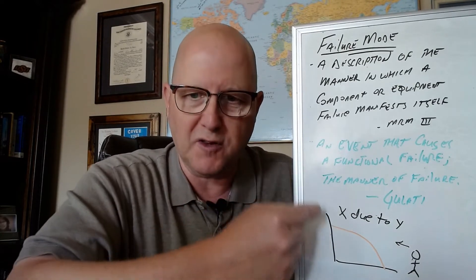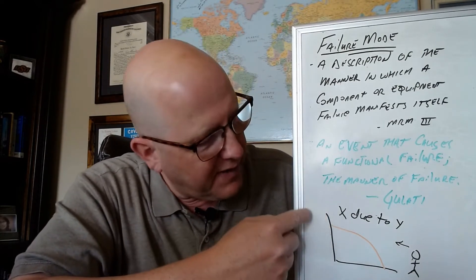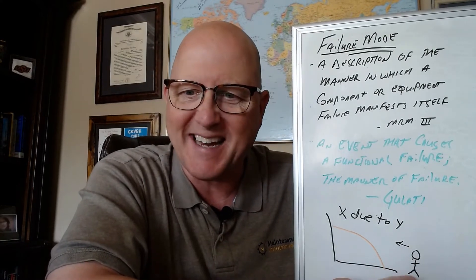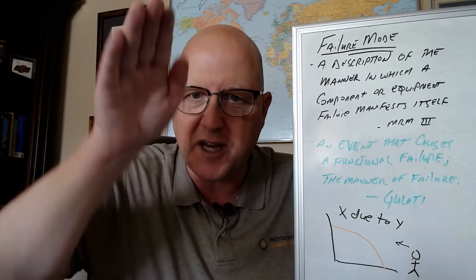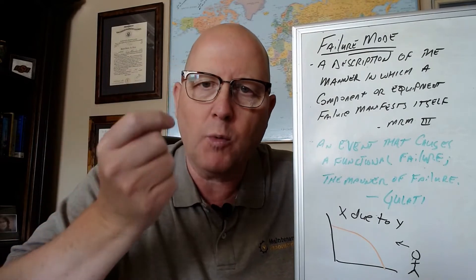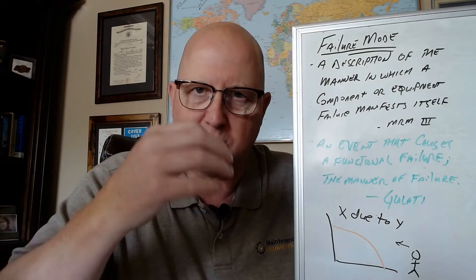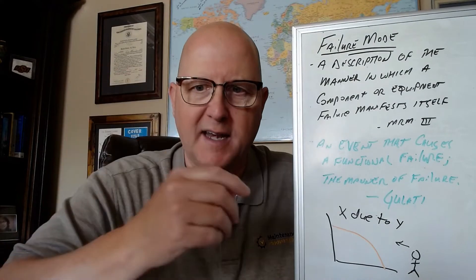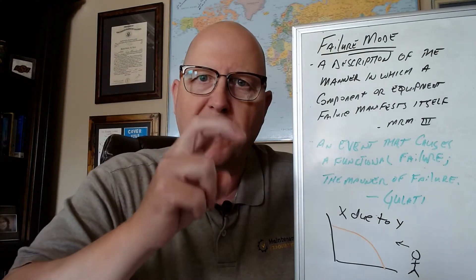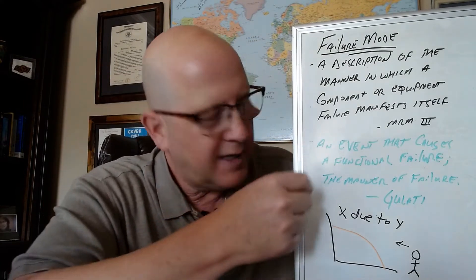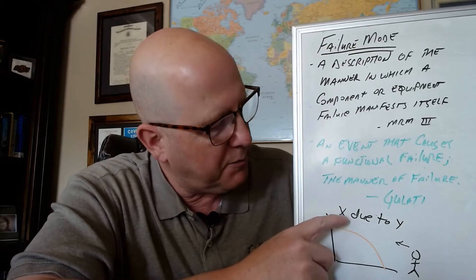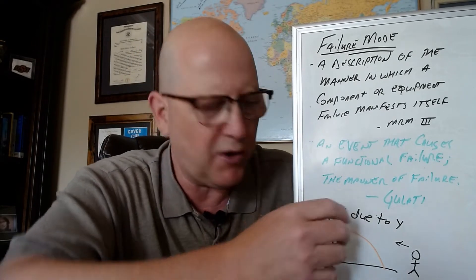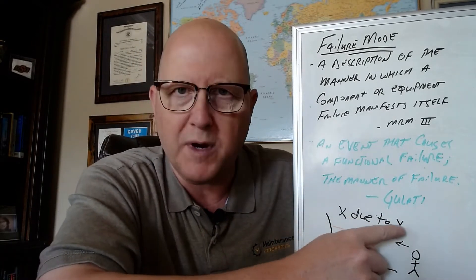Here's what I know. If you took the P-to-F curve — I've got a little simple P-to-F curve here — this represents you and me standing at the end just sort of looking up the P-to-F curve. What are we actually going to see coming towards us? What is that manner of the failure? What are we looking at? You want to write a failure mode in this formula: X, whatever the component is, fails due to Y reason.